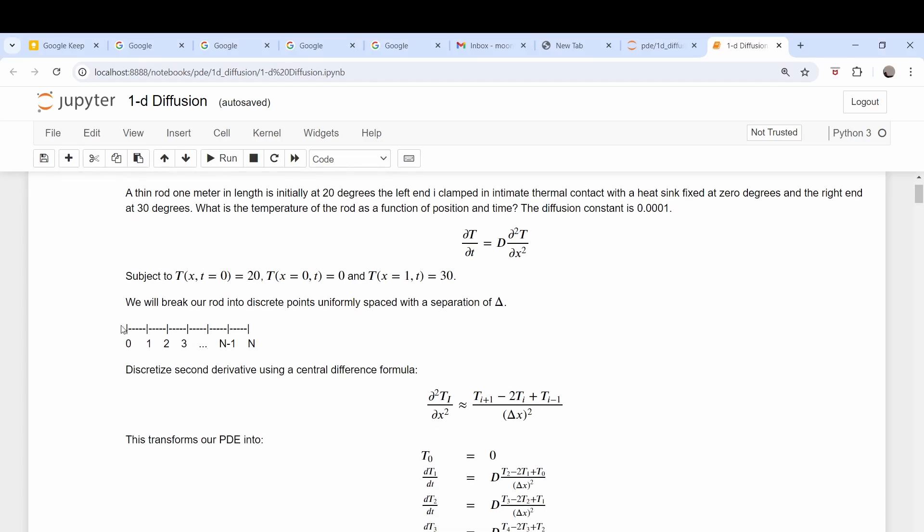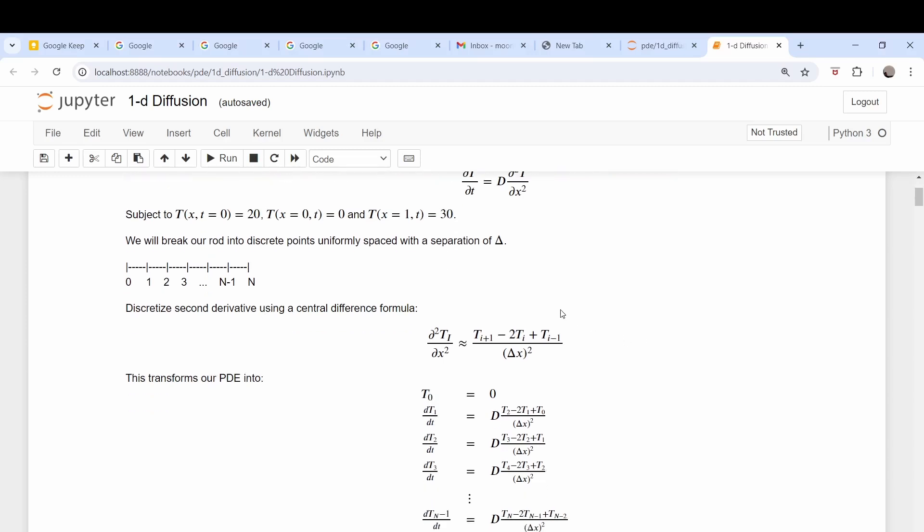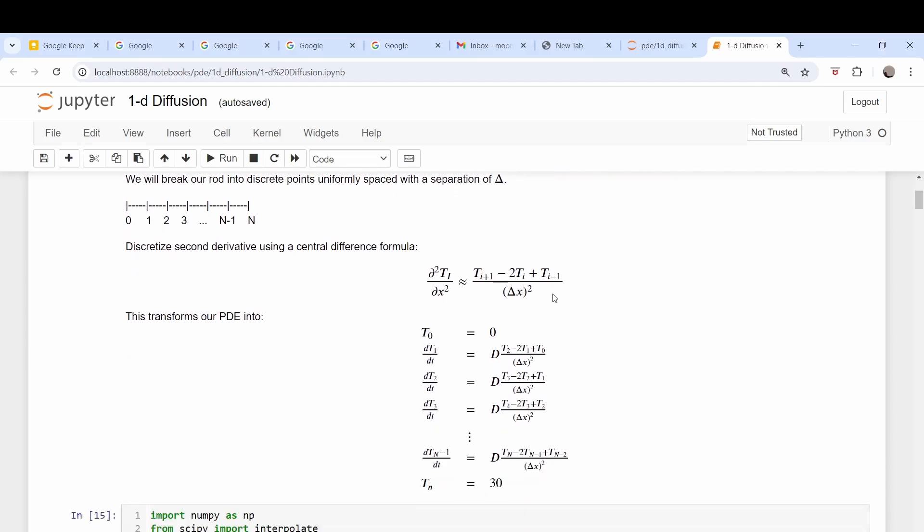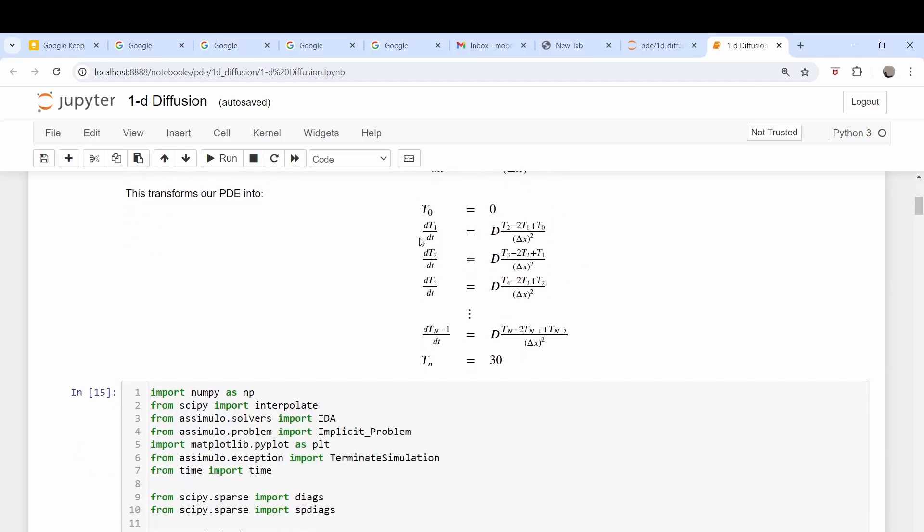So the way we approached this problem was to discretize it, so we broke up our continuous line into a series of N points, and then for each point what we did is we wrote, using a finite difference method here, we wrote a series of ordinary differential equations at each grid point to approximate our partial differential equation.